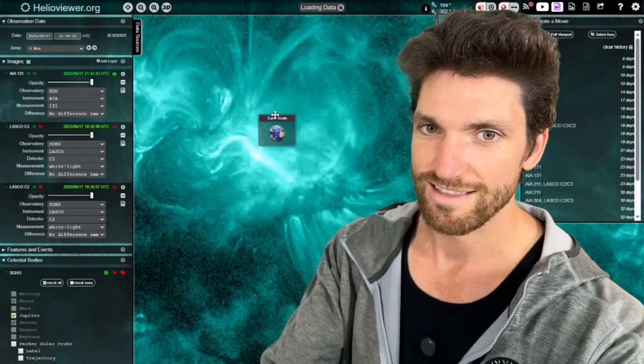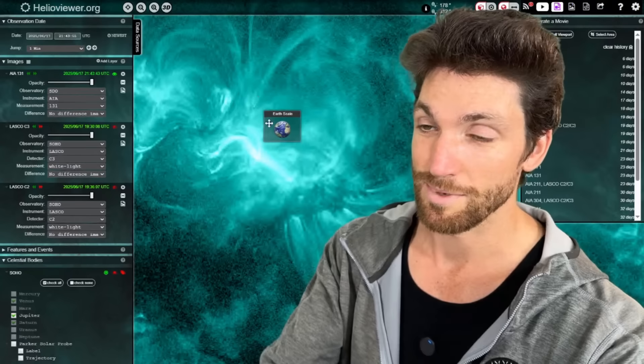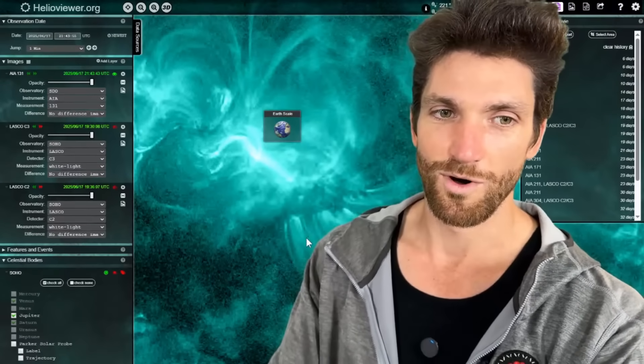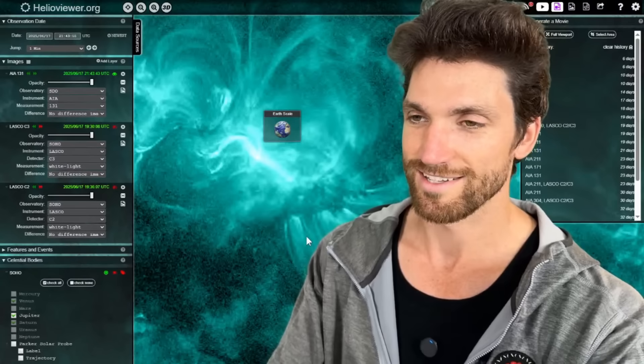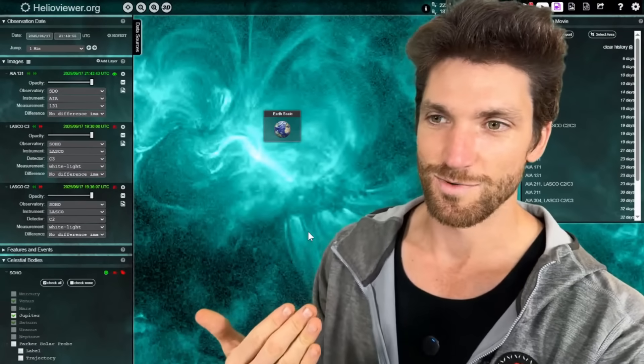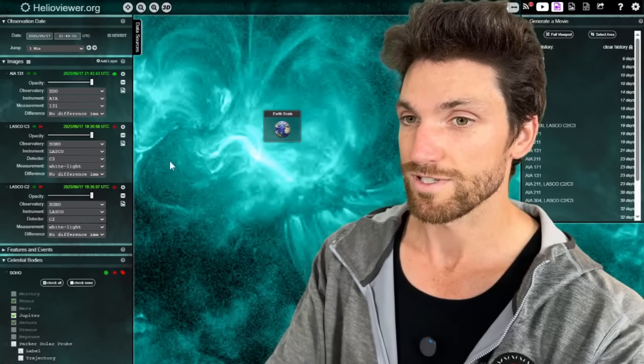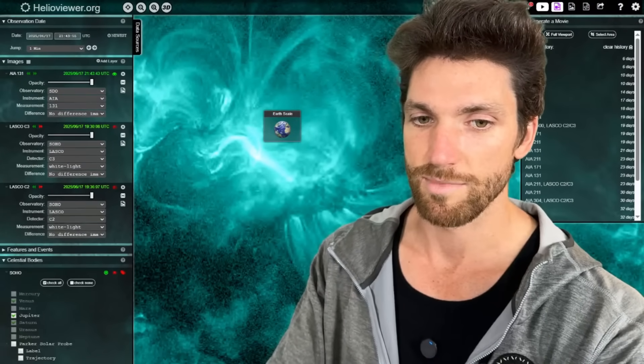But even there, that's still really big. So Earth would not have had a good time, but that's why we were at one astronomical unit. We are a comfortable distance away from the sun, thankfully. But that does mean that these light photons hit us in 8.3 minutes.